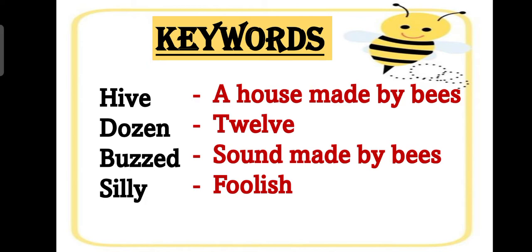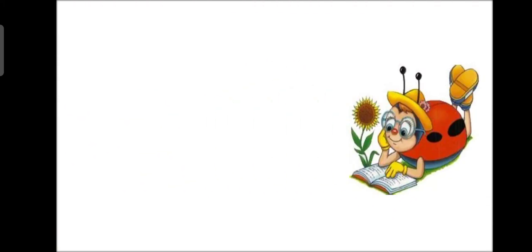So now moving ahead we start our chapter two children written by Spike Milligan. And now we start our poem. So please children open your book and put your finger on your book and let's repeat after me.